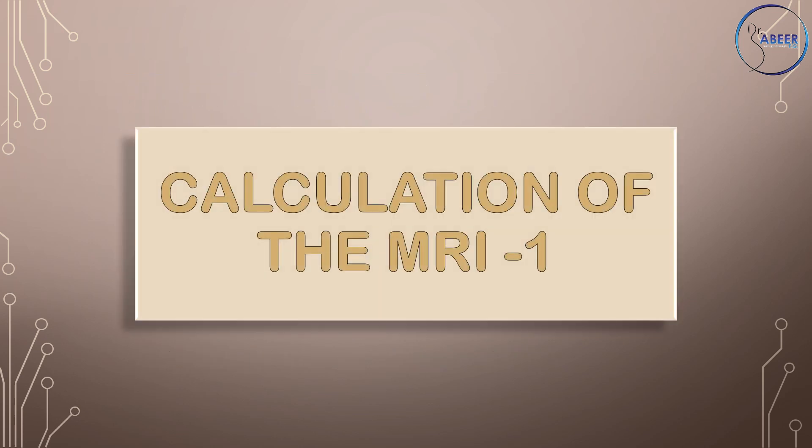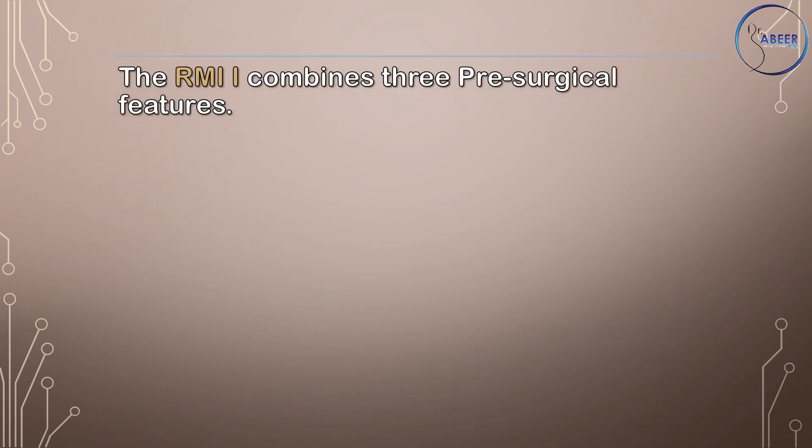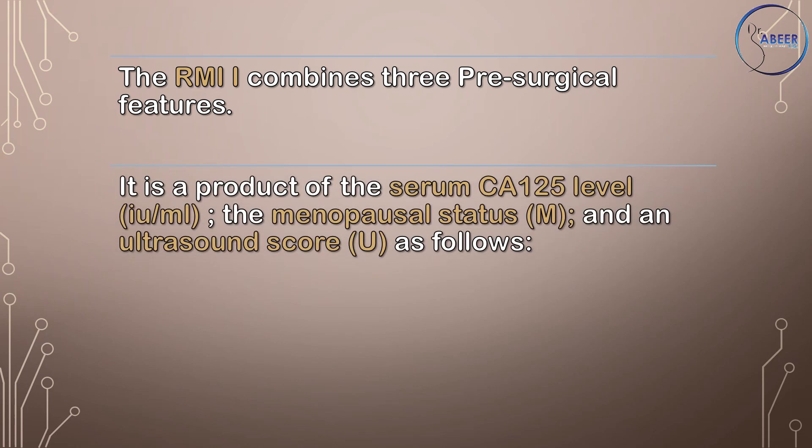Calculation of the Risk of Malignancy Index 1. The Risk of Malignancy Index 1 combines three pre-surgical features. It is a product of the serum CA-125 level in international units per ml, the menopausal status or M, and an ultrasound score or U.